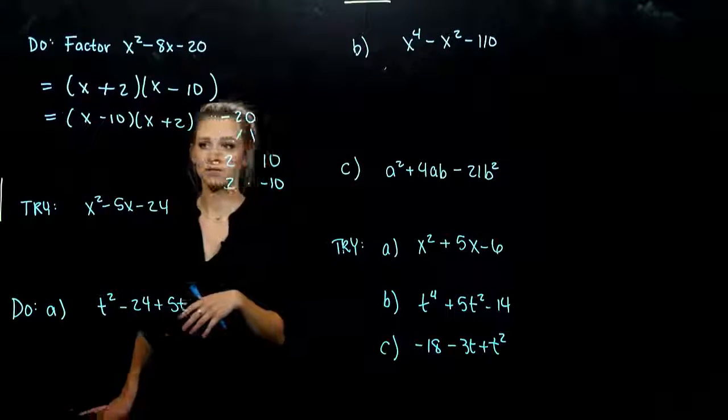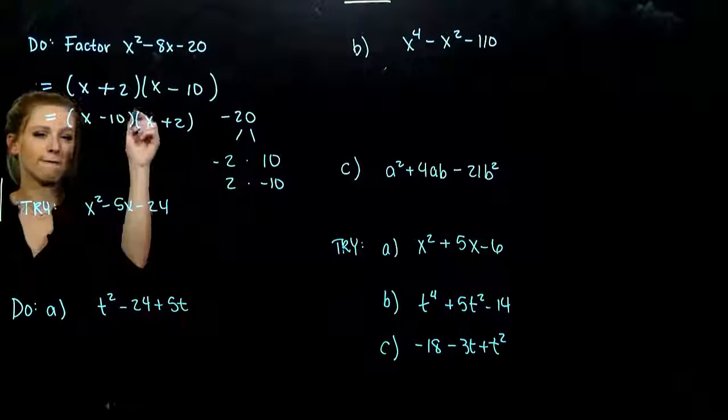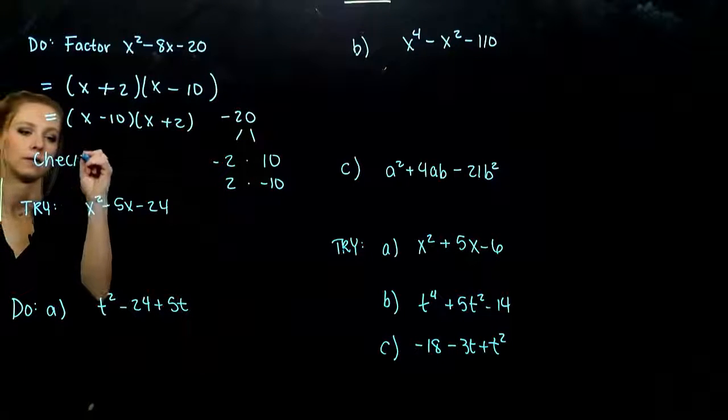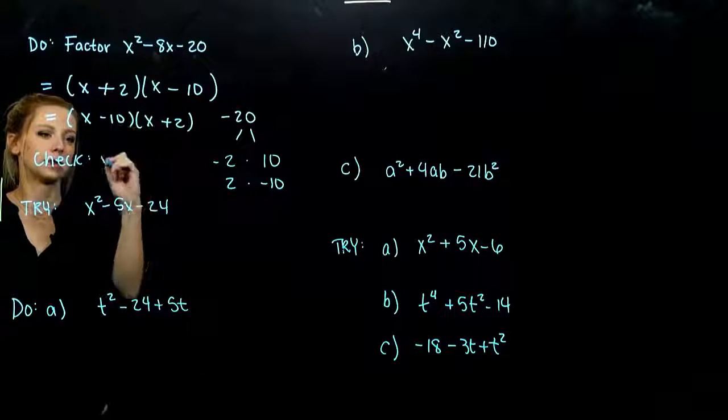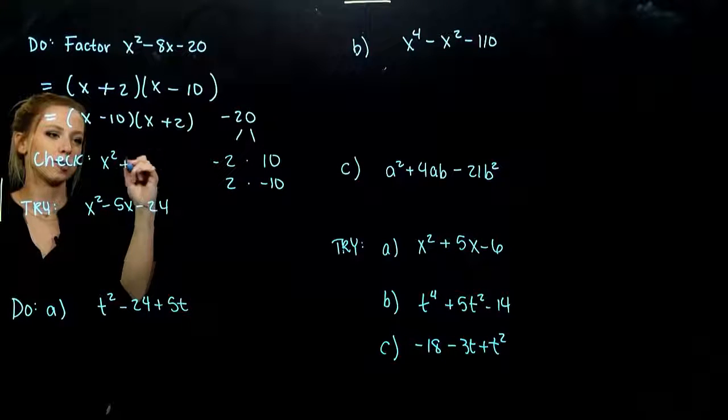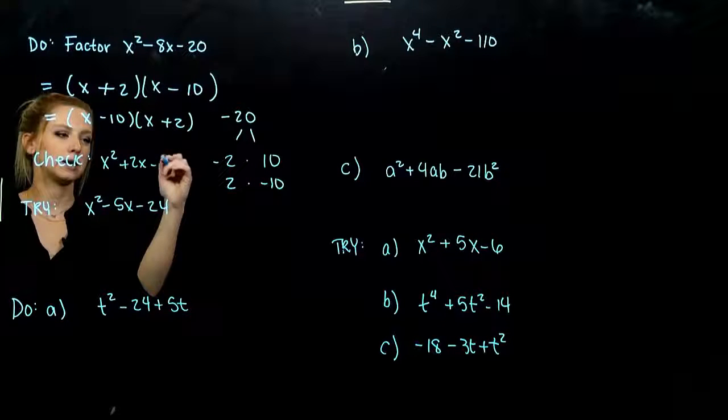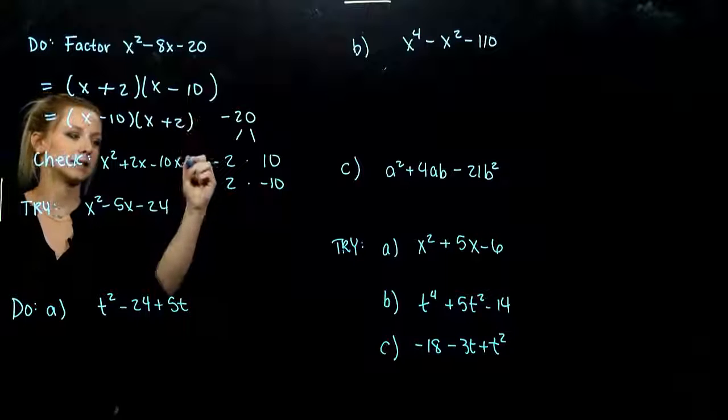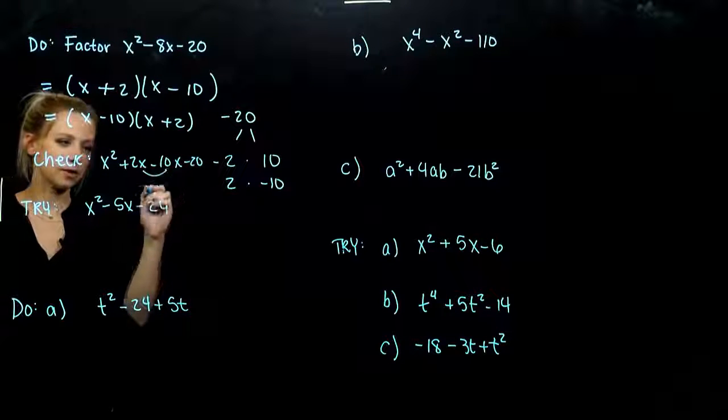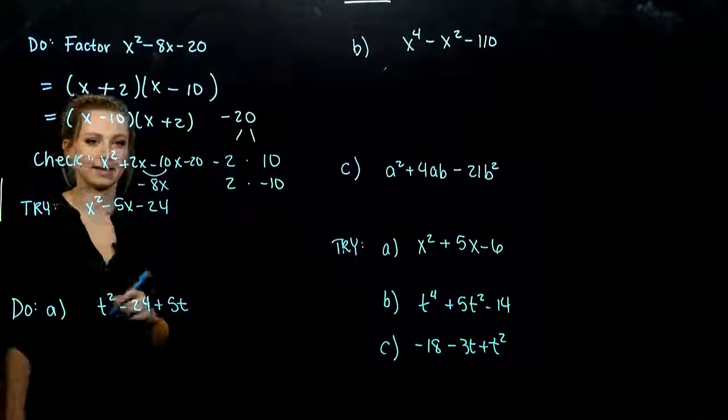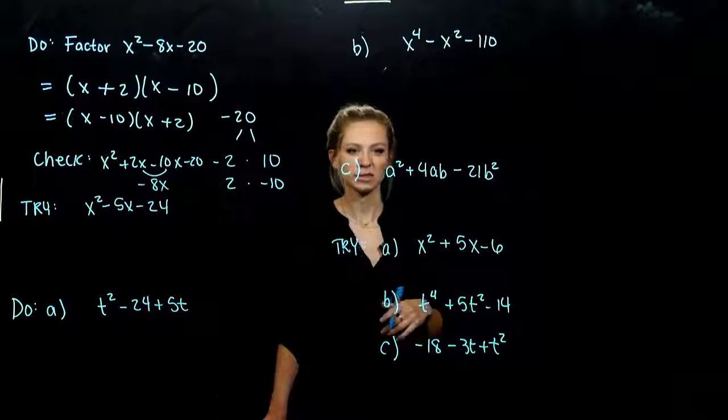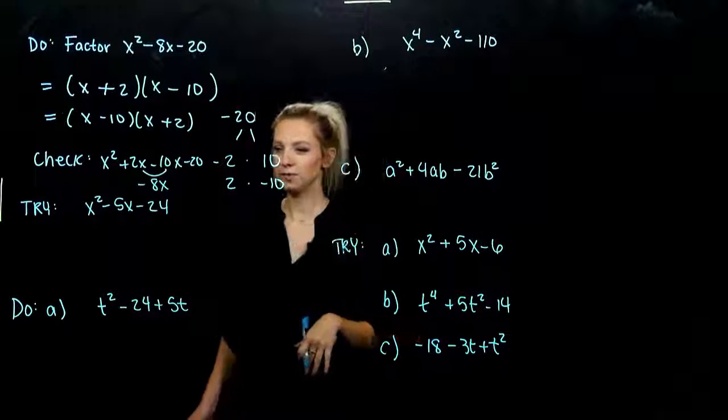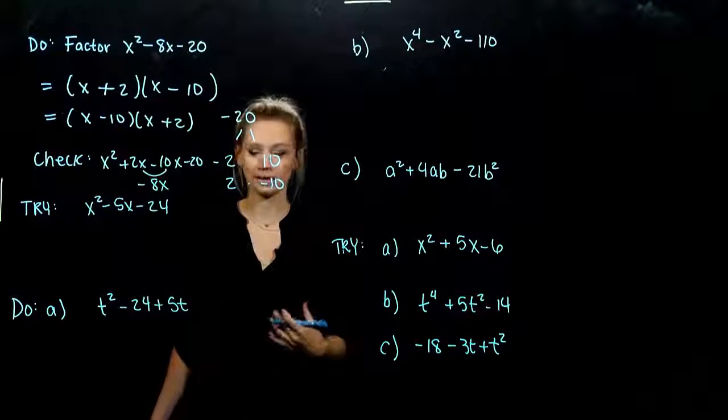And we can always check if you're not sure that this is correct. Foil it out. So we'll check. First, we're going to get x squared. Outer, plus 2x. Inner, minus 10x. And last, minus 20. When we combine those two, we get our negative 8x that we were looking for. So we can always check after we factor to make sure we actually broke it down correctly.